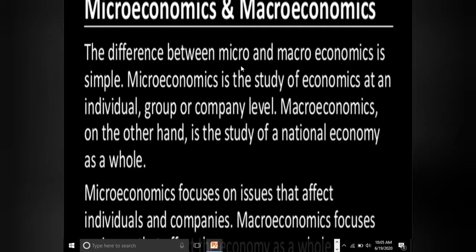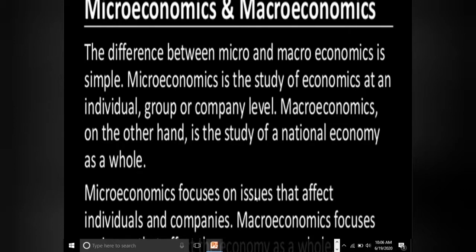The difference between micro and macroeconomics: Microeconomics is the study of economics at an individual, group, or company level। Macroeconomics, on the other hand, is the study of national economy as a whole। Microeconomics focuses on individual and company level issues and problems, while macroeconomics focuses on issues and problems of the whole economy।